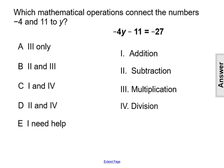Which mathematical operations connect the numbers negative 4 and 11 to y in the equation negative 4y minus 11 equals negative 27?